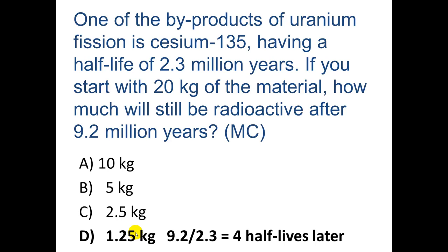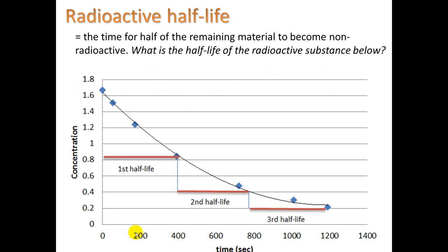This illustrates the idea of radioactive half-life. If you start with a certain amount, after one half-life period you'll have half of it still being radioactive. After another half-life period, you'll have half of that still radioactive, and eventually the radioactivity becomes negligible. For example, looking at a graph: what is the half-life of the radioactive substance shown? We can see it's about 400 seconds — at 400, then 800, then 1200 seconds.